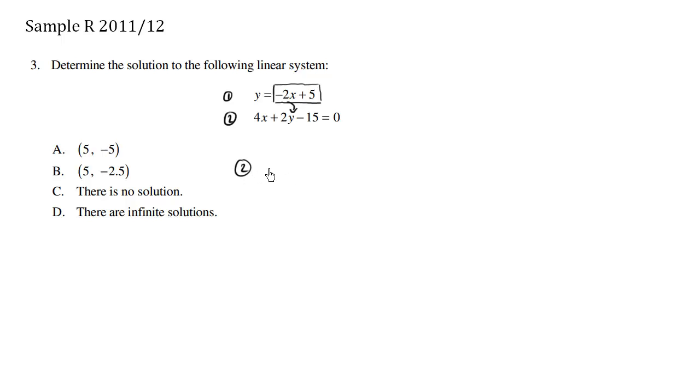Focusing on equation number 2, we have 4x plus 2y, which we know, minus 15 equals 0. So the y value we know by combining these equations: the y value is negative 2x plus 5.